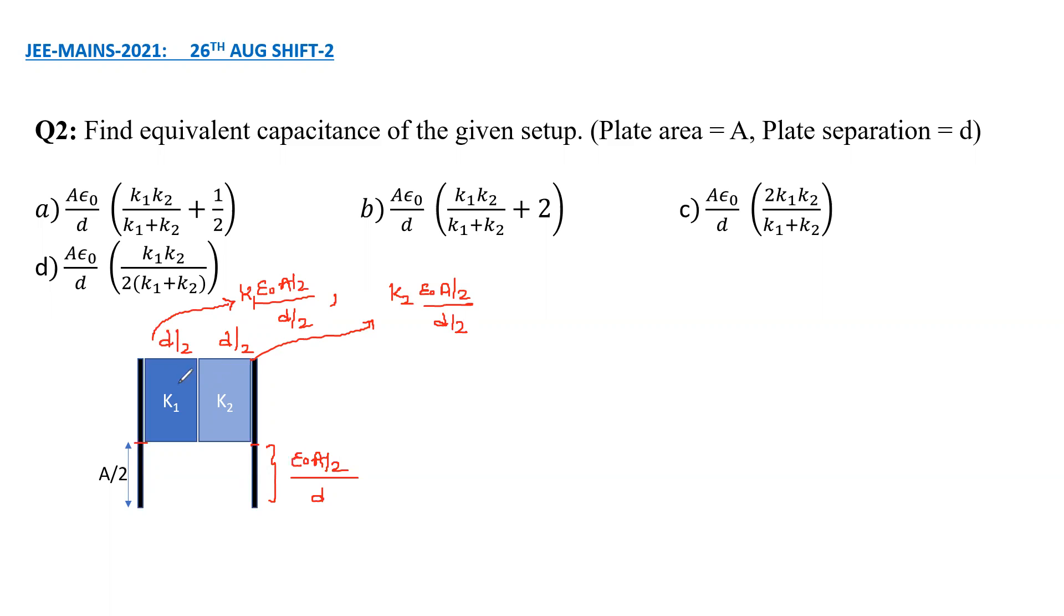And the other capacitor has capacitance of k2 epsilon naught A by 2 upon d by 2. The upper two capacitors are in series. So their equivalent capacitance is C1 C2 upon C1 plus C2. So if I take out epsilon naught A by d from here, I will be left with k1 k2 upon k1 plus k2.